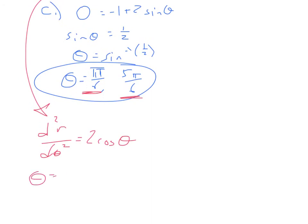First I'll do when θ is π/6. When θ = π/6, we have 2 times the cosine of π/6, which is √3/2. So we end up with √3. Because that is positive, our function of r is concave up, which means this value is a minimum.